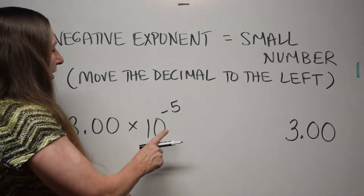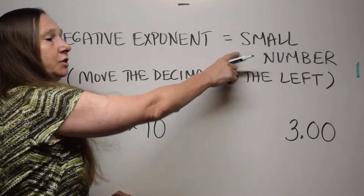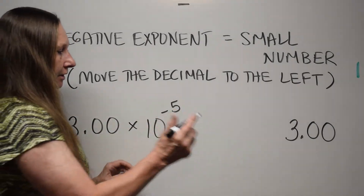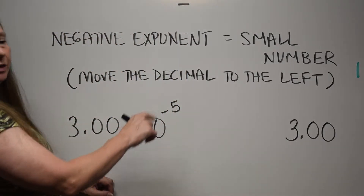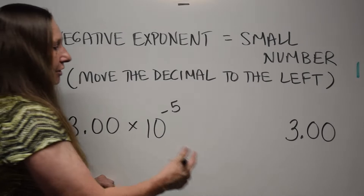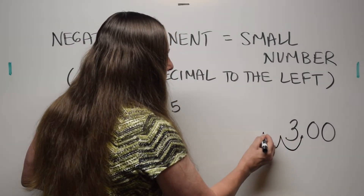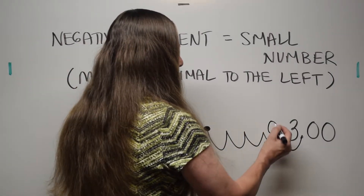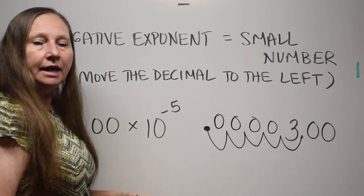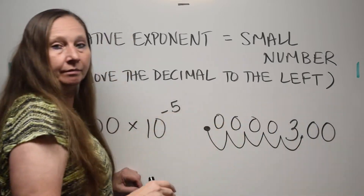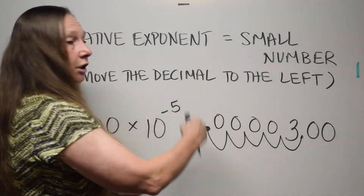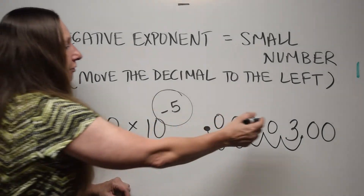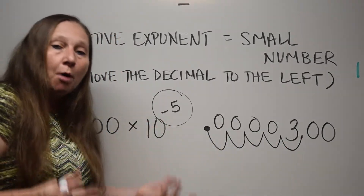On the other hand, when you have a negative exponent, that means that it was a small decimal number, so you're going to have to move the decimal to the left. Let's try that. This is 3.00 times 10 to the negative five. We're going to go five jumps to the left: one, two, three, four, five. If you move the decimal to the left, you are creating a small number — point something. So when you see a negative exponent, move the decimal to the left because the number is a small number.